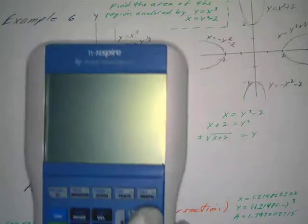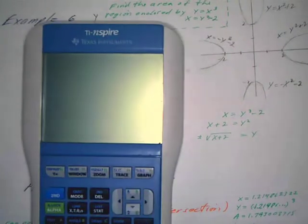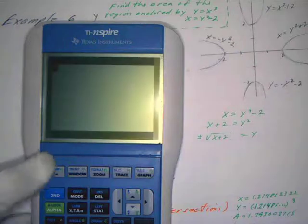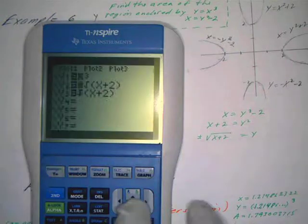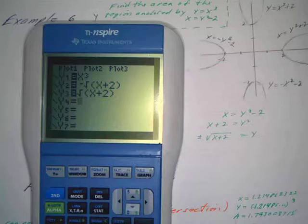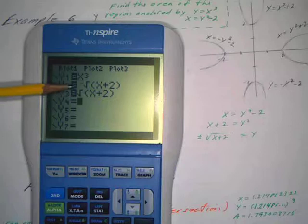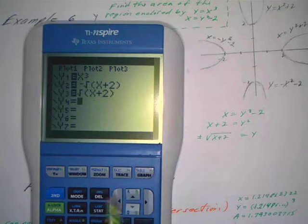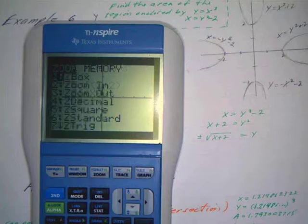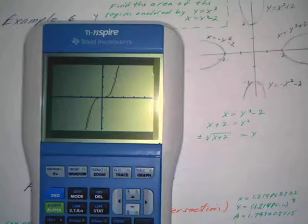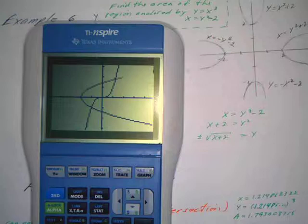I've already entered these into the calculator. Y1 is x cubed, and here's the lower branch and upper branch of the parabola. If we graph that — zoom and graph — there's your cubic, the lower branch is the negative square root, and the positive square root comes up there.